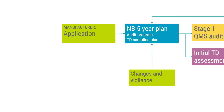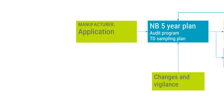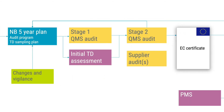The start of the initial conformity assessment is the manufacturer's application to the notified body. Based on the application data, the notified body should be able to set up a so-called 5-year plan that shall cover all planned activities for the coming certification cycle. The 5-year plan then needs to be continuously updated during the cycle. By default, initial certification requires a QMS on-site audit and an initial technical documentation assessment.